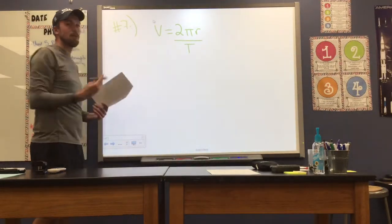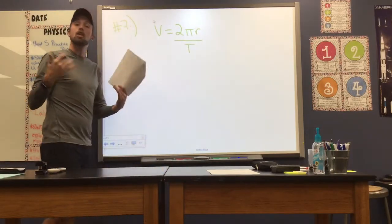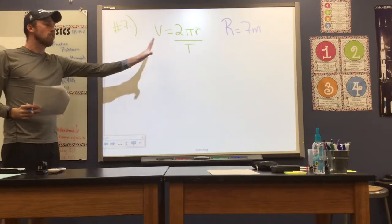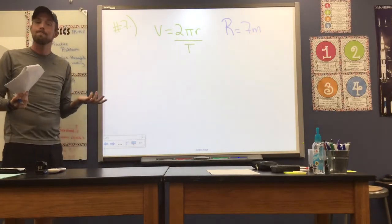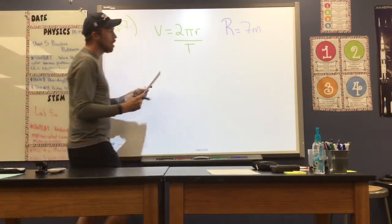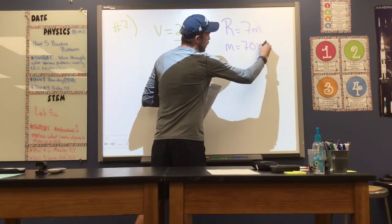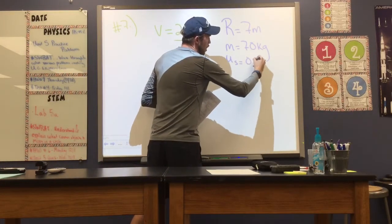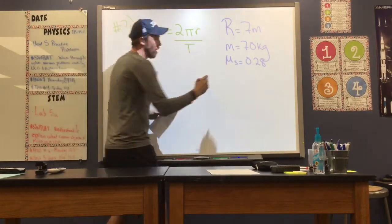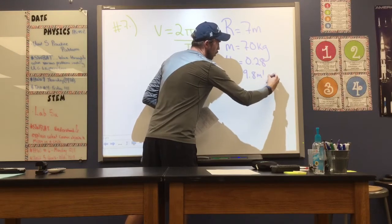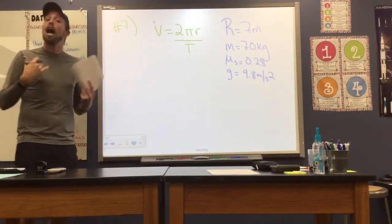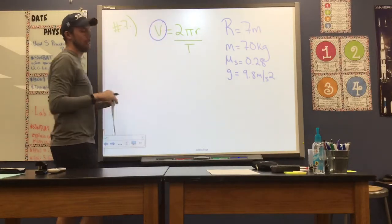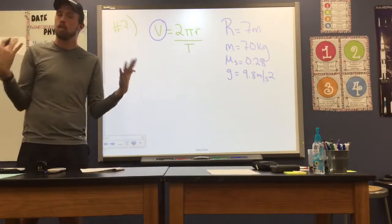In order to solve for T, we're going to need a couple of things. We are given the radius of our circle — that's 7 meters. If we're going to use this equation, we need to solve for our velocity. Our mass we'll treat as 70 kilograms. The coefficient of static friction, because we are not sliding, is 0.28. And acceleration due to gravity is 9.8 meters per second squared. We have a lot of information and we have to figure out how we're going to use it. The thing we need is the velocity, so there has to be another way to approach this problem to solve for velocity.